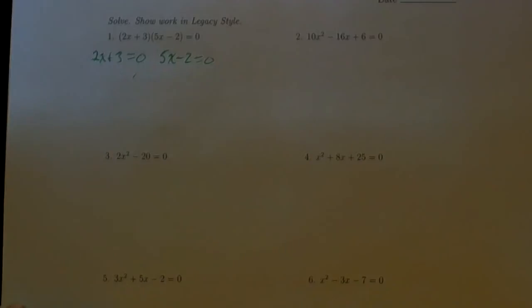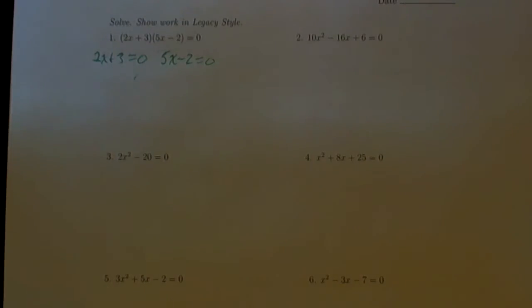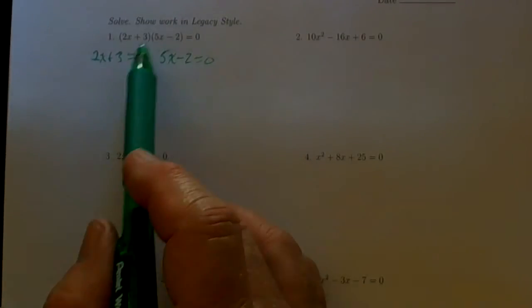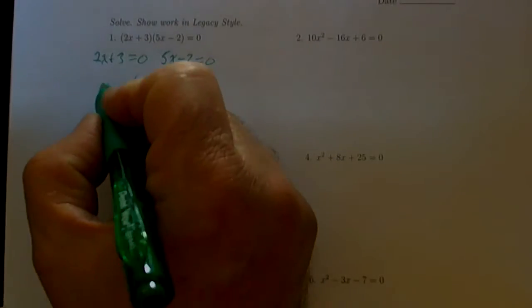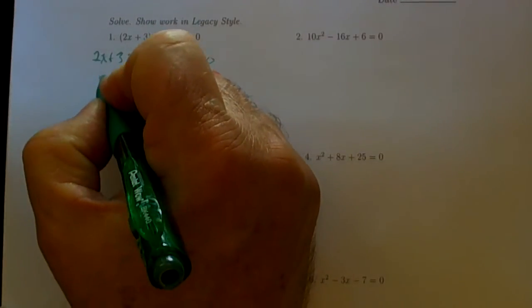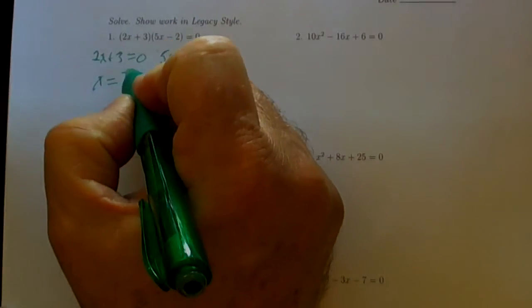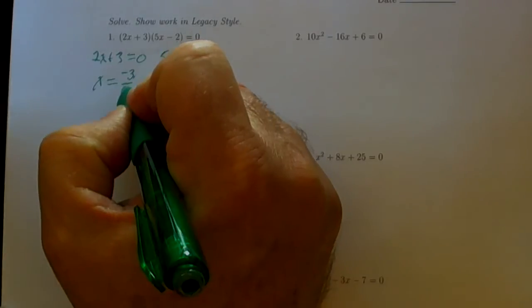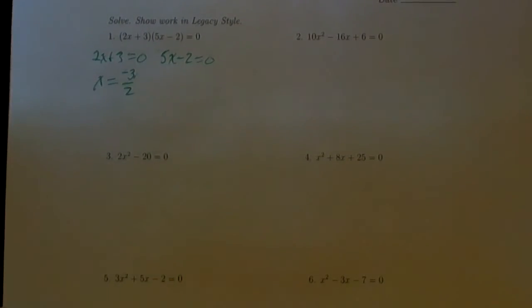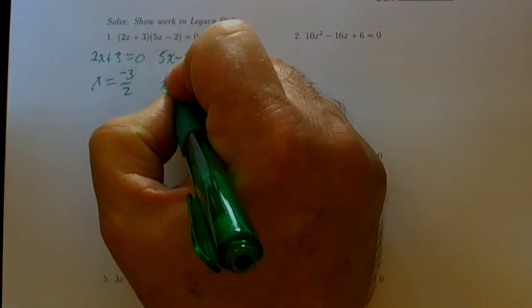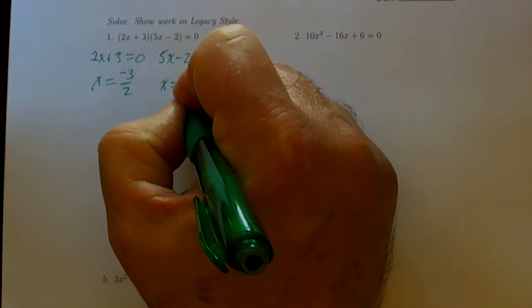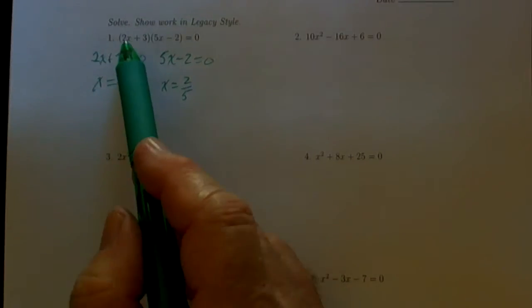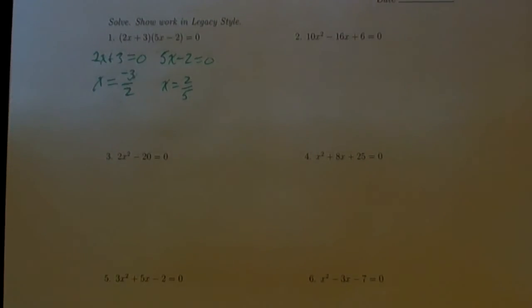If either one of those happens, the result is going to be zero — that's the only way this product can equal zero. In the first case, we subtract 3 from both sides and divide by 2, so x is equal to negative 3 divided by 2. In the other case, we add 2 to both sides and divide by 5, so x equals 2 divided by 5. Those are the two solutions; we should substitute them back into the original problem to verify.